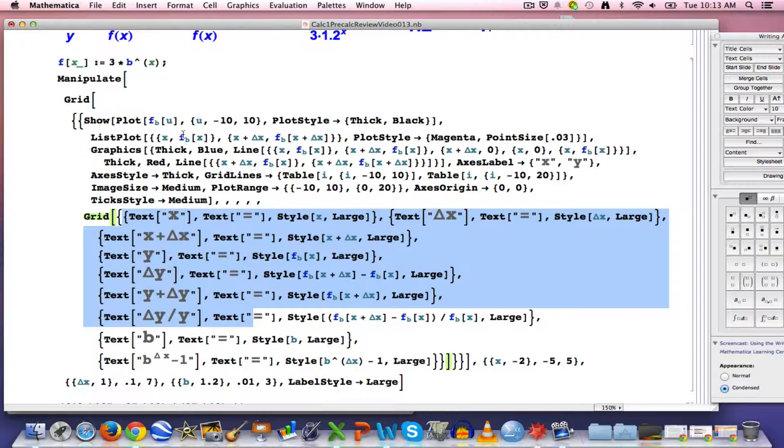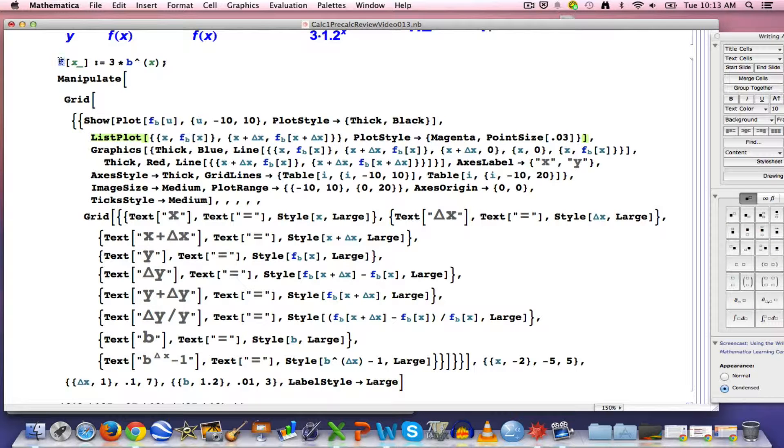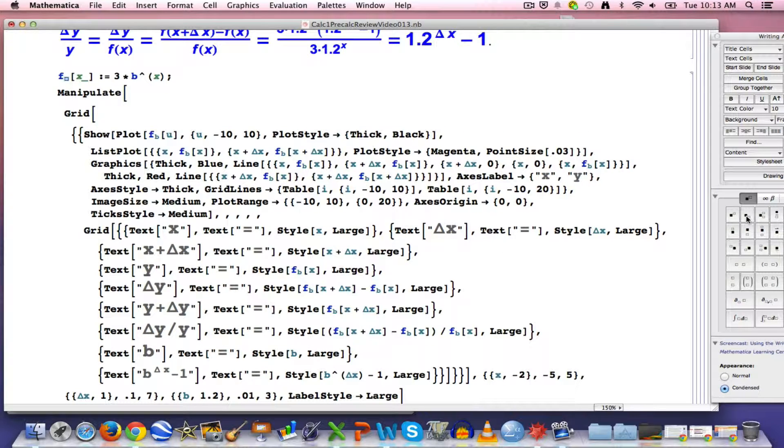But I do need to make one change before I enter this. You'll notice if you look at the Fs in various spots, it's not just a plain F. It's an F with a subscript, the subscript being the animation parameter B. I haven't done that up here yet. I need to make a subscript and I need to put a B here to emphasize that B is a variable in a sense, although it's not the variable I plot with respect to. It's an animation variable or an animation parameter.